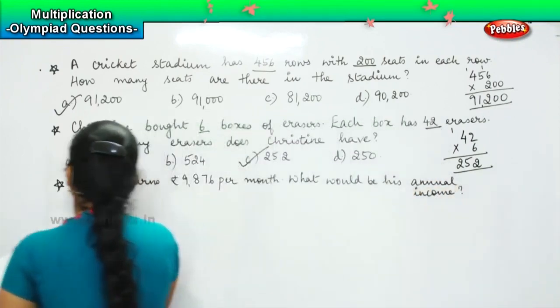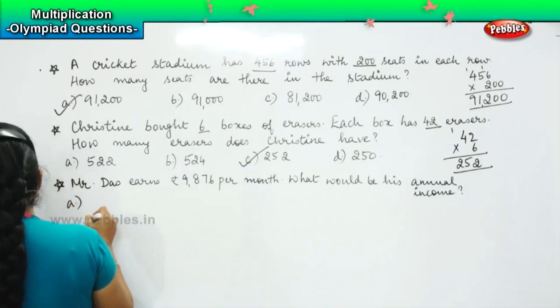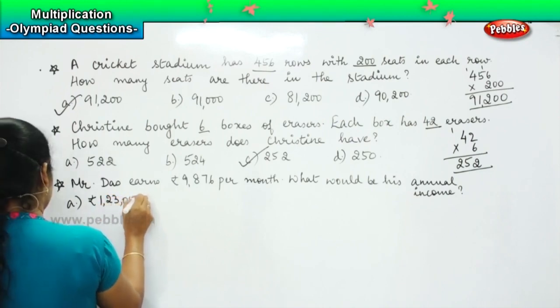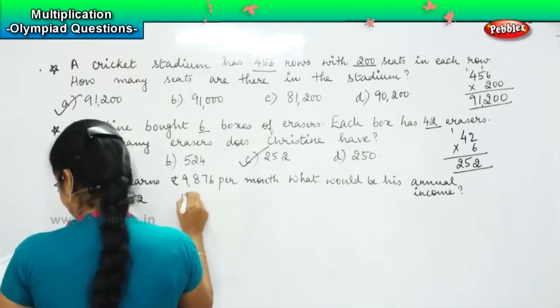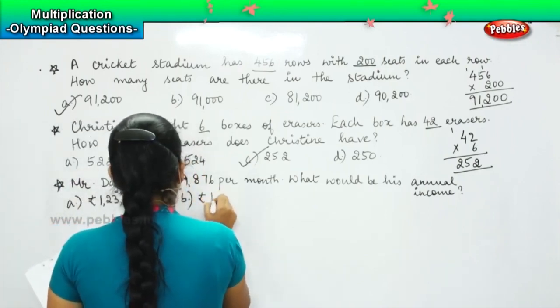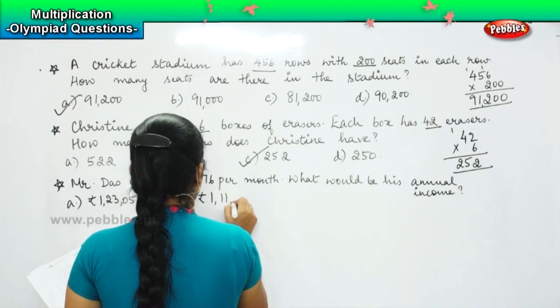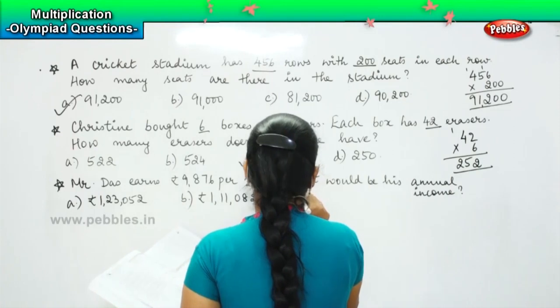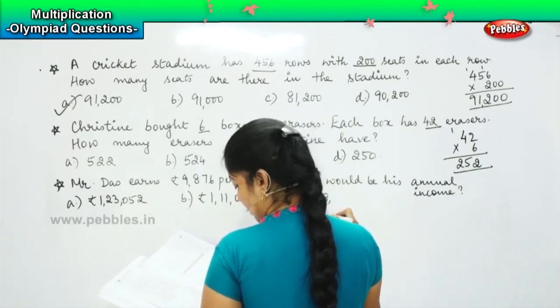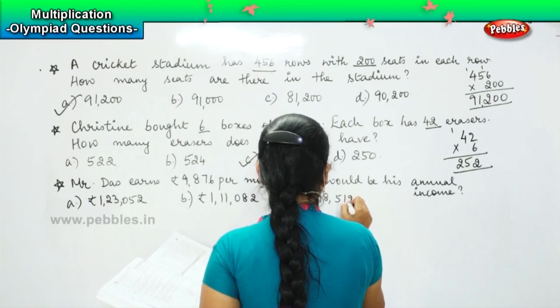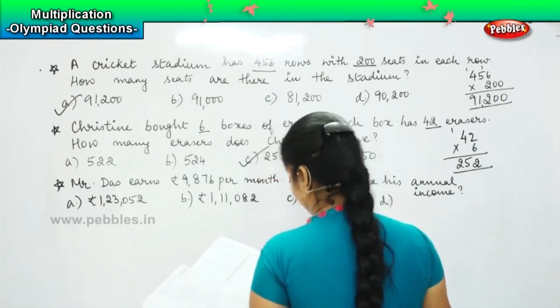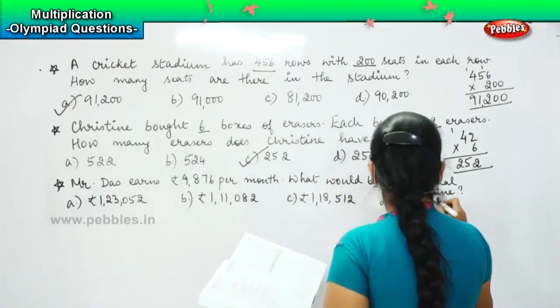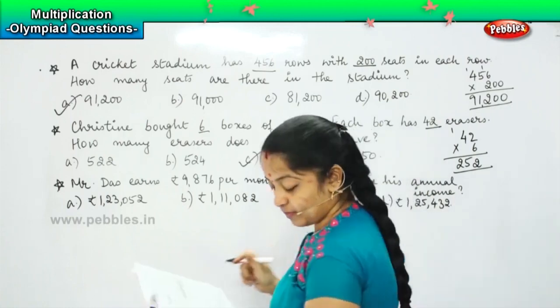And your options are: option A, rupee 1,23,052. Option B, rupee 1,11,082. Option C, rupee 1,18,512. Option D, rupee 1,25,432.